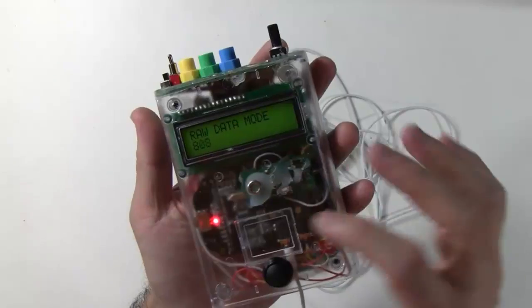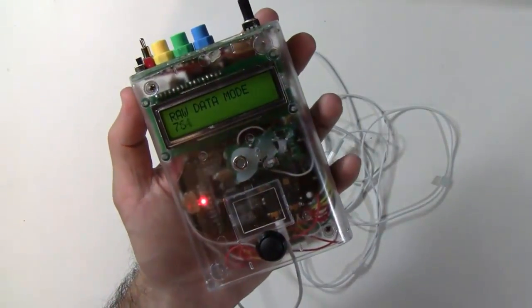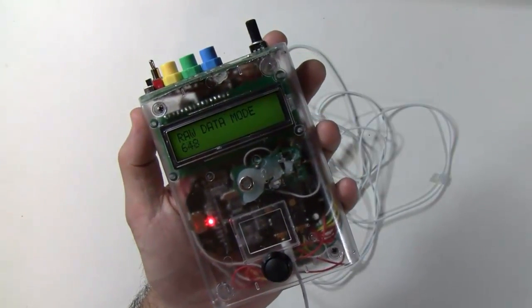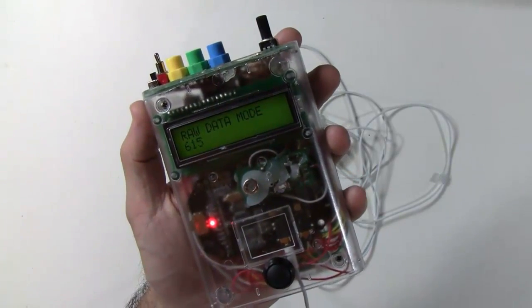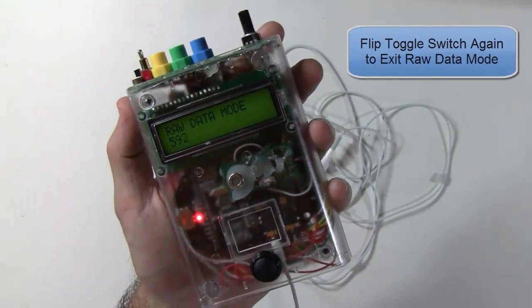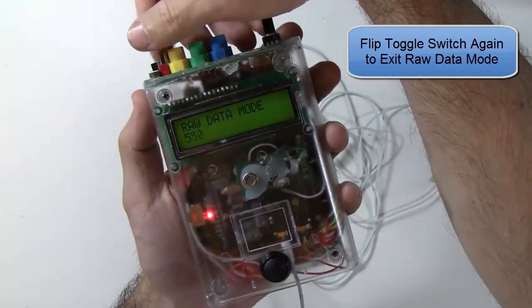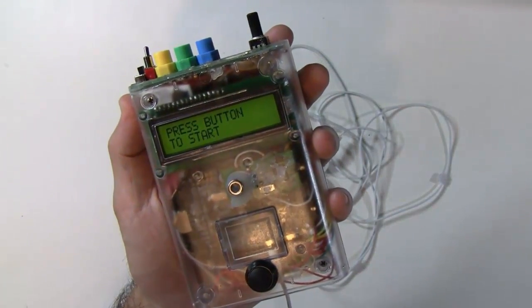All the software does is it just reads that number relative to what the baseline was and then determines how much you've had to drink and then, of course, talks to you. So if you want to see what's going on in terms of the actual raw data coming in from the alcohol sensor, just flip that switch. And if you want to go back to normal mode, just go ahead and flip it back.